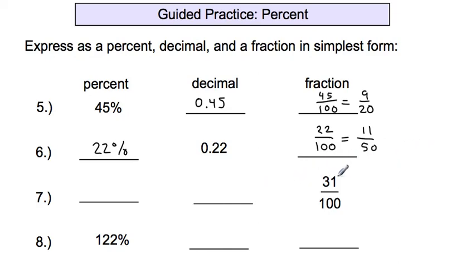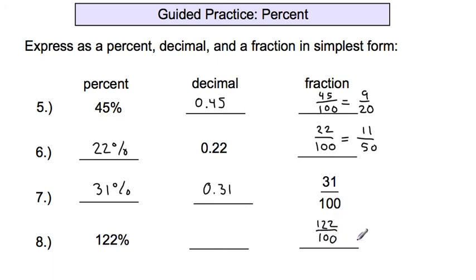Number 7: we have the fraction 31 over 100. As a percent, it's 31 percent because percent means out of 100. As a decimal, it's 31 hundredths — 0.31 — and the 1 is in the hundredths place. Number 8: 122 percent as a fraction is 122 over 100. As a decimal, that last 2 must be in the hundredths place, so it's 1.22. The simplified fraction is 1 and 11 over 50.